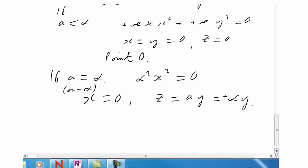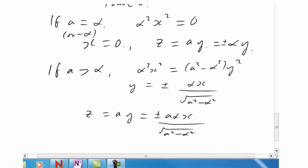Finally, if a is bigger than alpha, our plane now cuts both the cones, but passes through the origin. The place where it cuts the cones is simply straight lines up the side of the cones. This time though, oriented differently. We get the straight line equation. z equals ay equals plus or minus a alpha over root a squared minus alpha squared x.